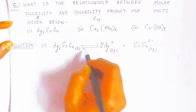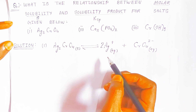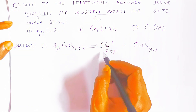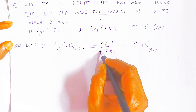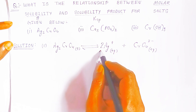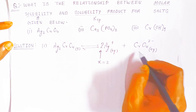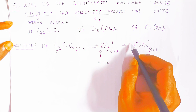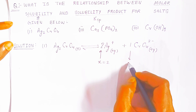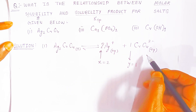This is a reversible process — the ions can combine again to form the salt. To find the relationship between S and Ksp, you need the coefficient of the cation, which we call x. Here x equals 2 for silver. For chromate there is no written coefficient, so y equals 1. x is the cation coefficient and y is the anion coefficient.